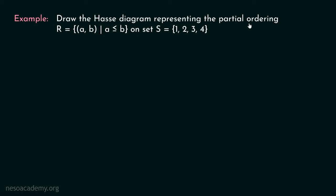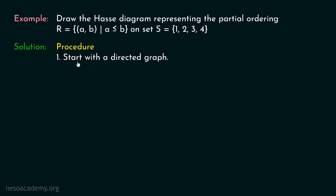Let's see one example: draw the Hess diagram representing the partial ordering R, which consists of all ordered pairs (A, B) such that A ≤ B, on set S = {1, 2, 3, 4}. Start with the directed graph. Place vertices from bottom to top: 1 at the bottom, then 2, then 3, then 4. I have placed 1 at the bottom because 1 is the least element in this set under the relation ≤.